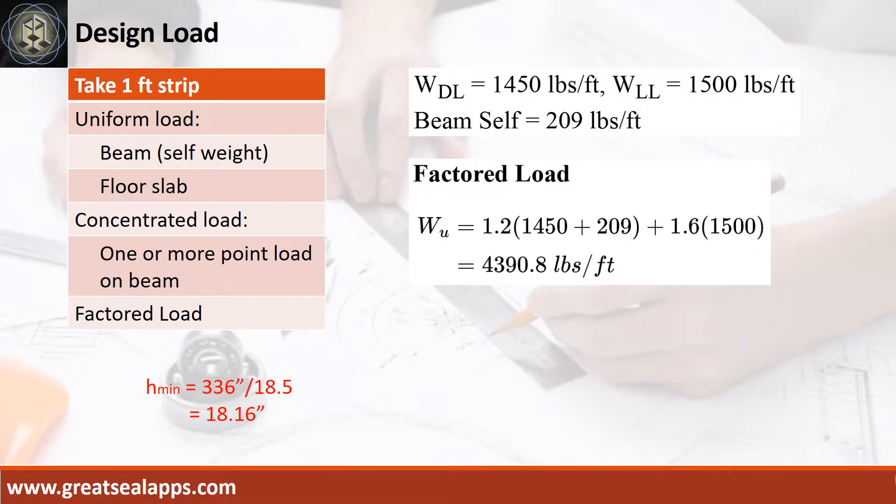The beam carries a uniform dead load of 1,450 pounds per foot and uniform live load of 1,500 pounds per foot. The beam's self-weight is 209 pounds per foot for a total factored load of 4,390.8 pounds per foot.